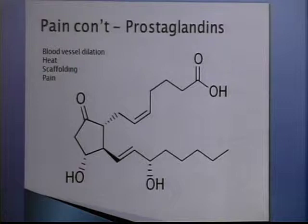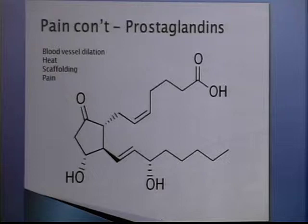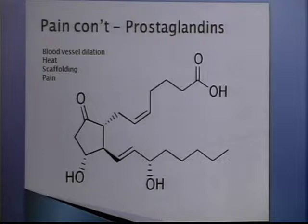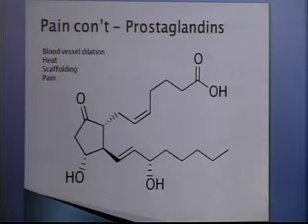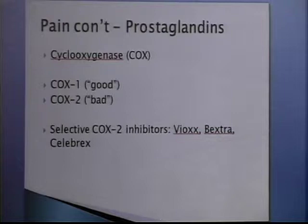Prostaglandins are synthesized on site in response to injury. They're pretty important for repair — they dilate blood vessels, bringing nutrients in and what you need to repair; they heat up the area, which speeds up chemical reactions to help you heal faster; they can be immobilizing and used as scaffolding to prepare the site for healing. And they also cause pain. The pain tells us that we're hurt. The prostaglandins are pretty short-lived and decay quickly, so they're just synthesized when we need them. They're synthesized by an enzyme called cyclooxygenase.